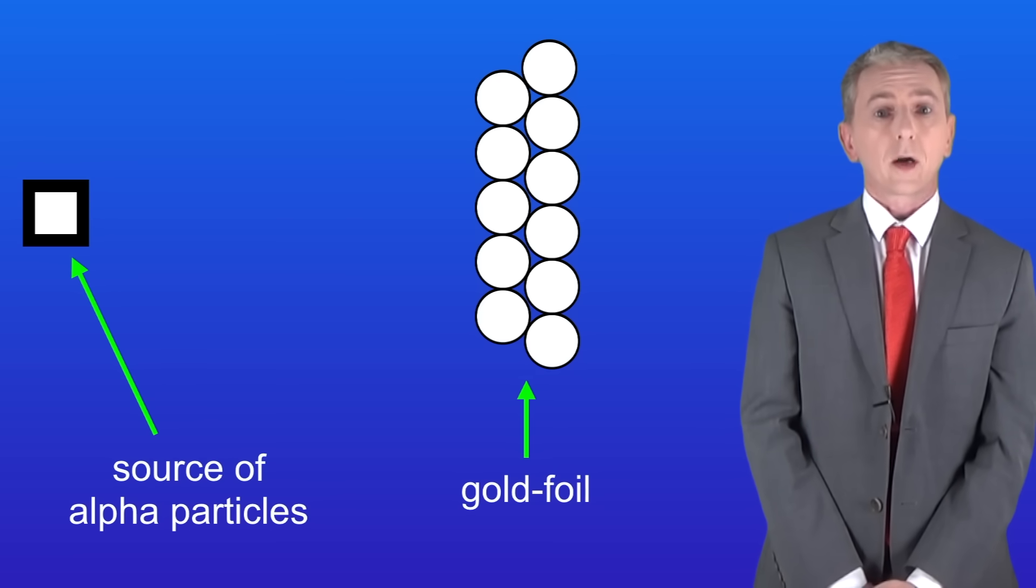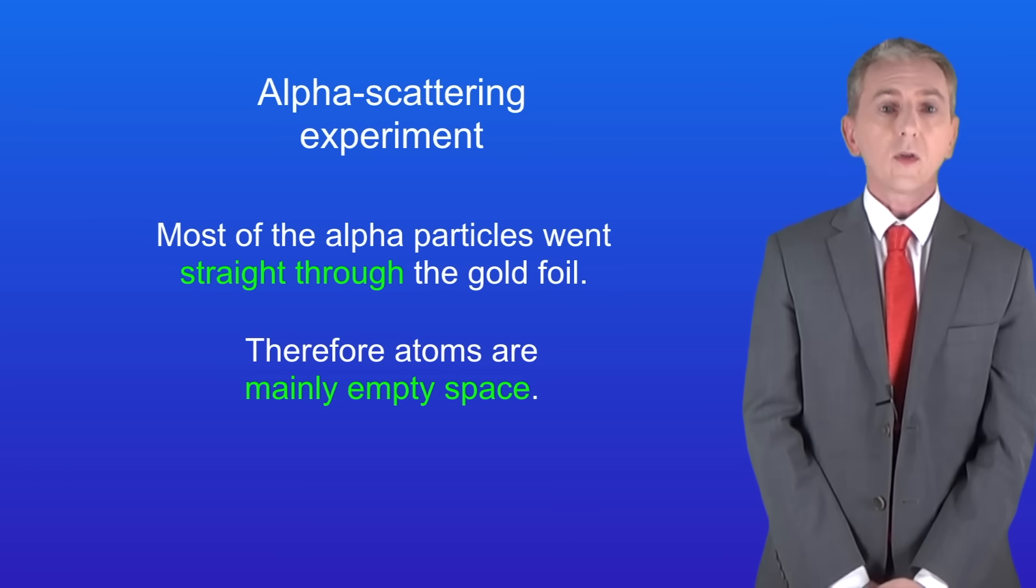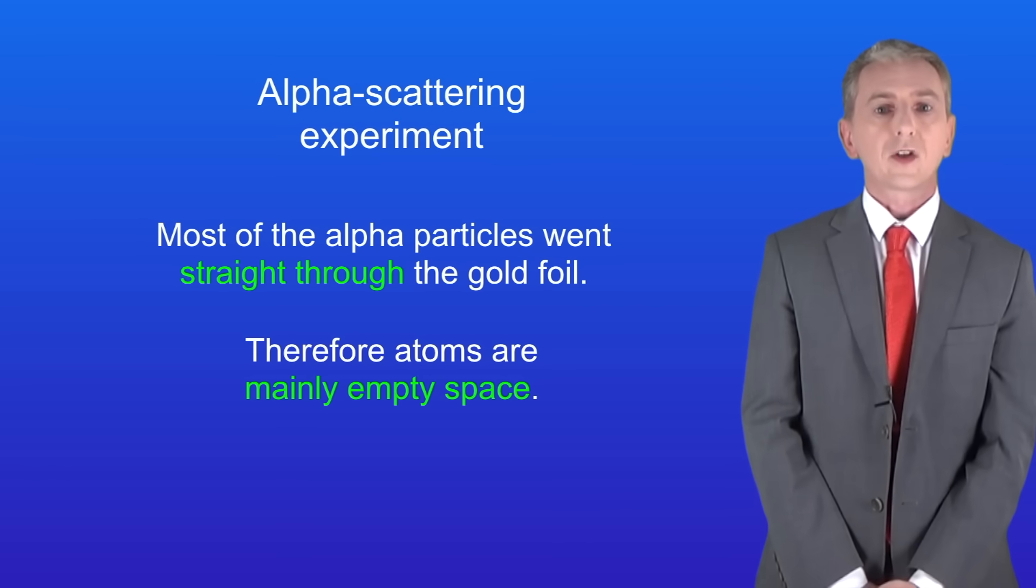So let's look at what scientists worked out from these results. The fact that most of the alpha particles went straight through the gold foil told the scientists that atoms are mainly empty space. This meant that the plum pudding model had to be wrong.